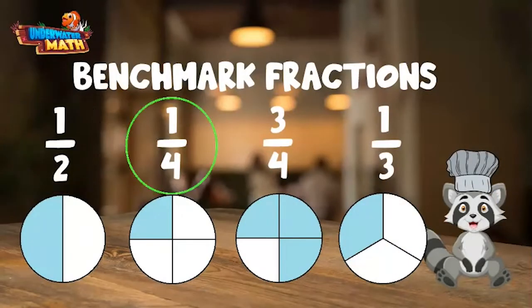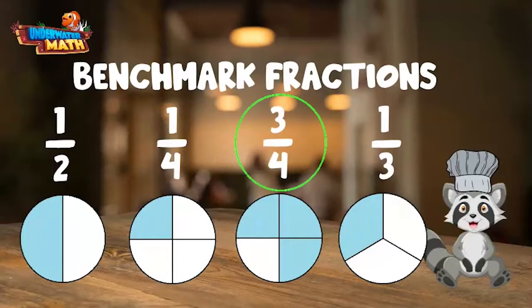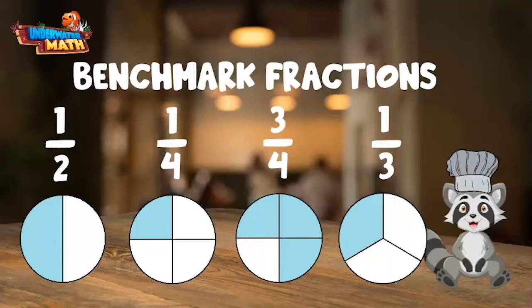One fourth is just half of one half. Three fourths is three equal fourths of a number or object. One third is if you cut something into three equal pieces. Benchmark fractions are used to help us make estimations about the size of parts.